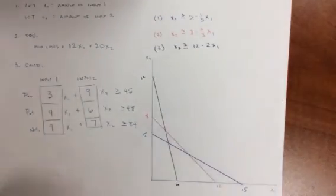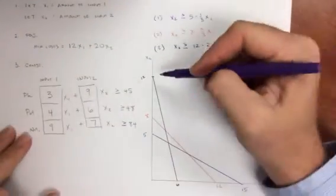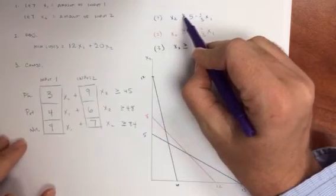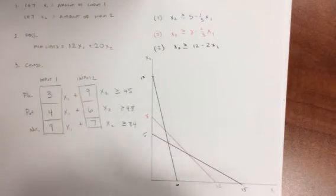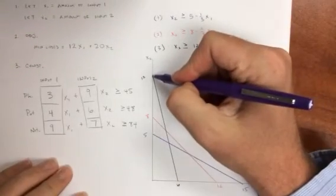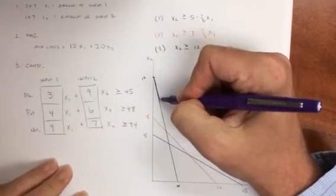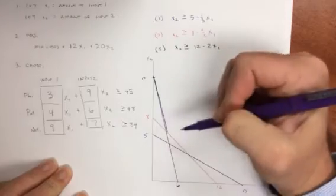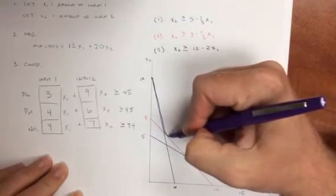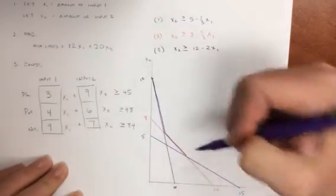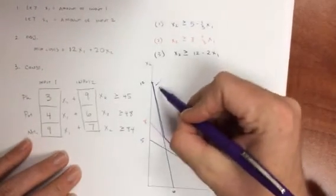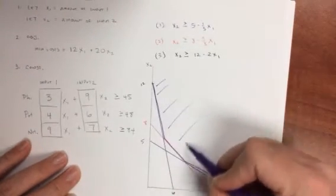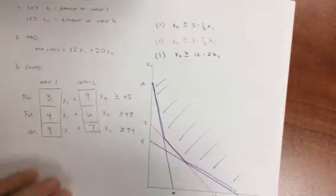And now I need to identify the feasible region. Well, the feasible region, now note, x2 has to be greater than or equal. So it's not the less than or equal like we did in example 1, but it needs to be greater than. So we're going to follow this line here, the black constraint, until we reach that kink. It's going to follow the red constraint, until we reach that kink. And it's going to follow the blue constraint.